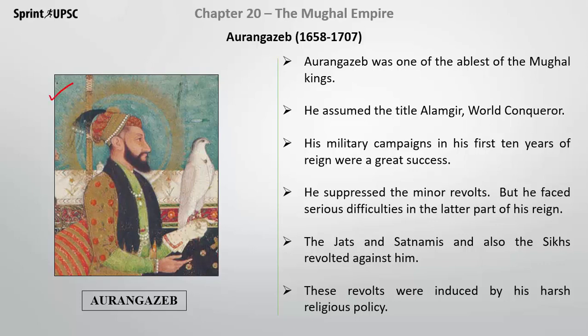This is the image of Aurangzeb. He was one of the ablest of the Mughal kings. He assumed the title of Alamgir, which means World Conqueror. His military campaigns were very successful in the first 10 years, and he also surpassed minor challenges.